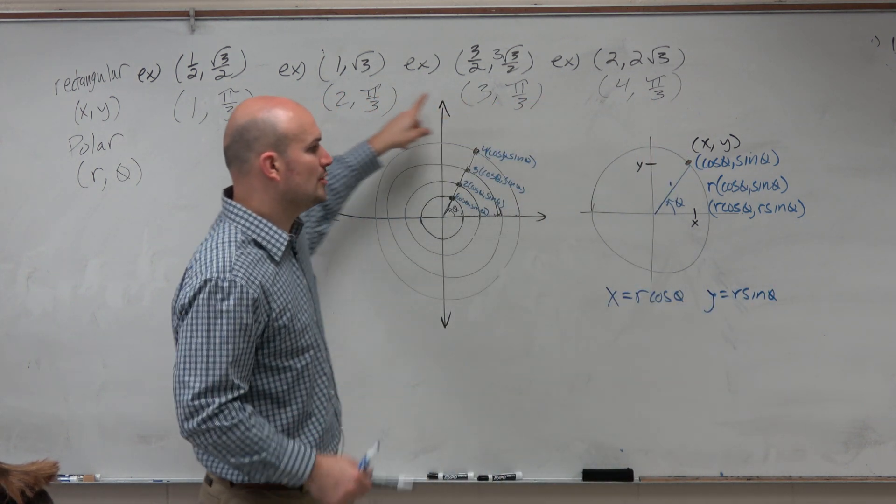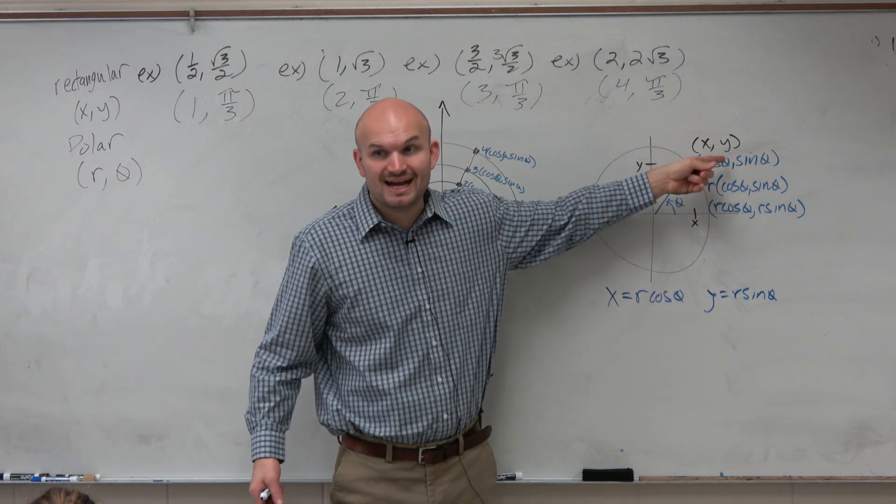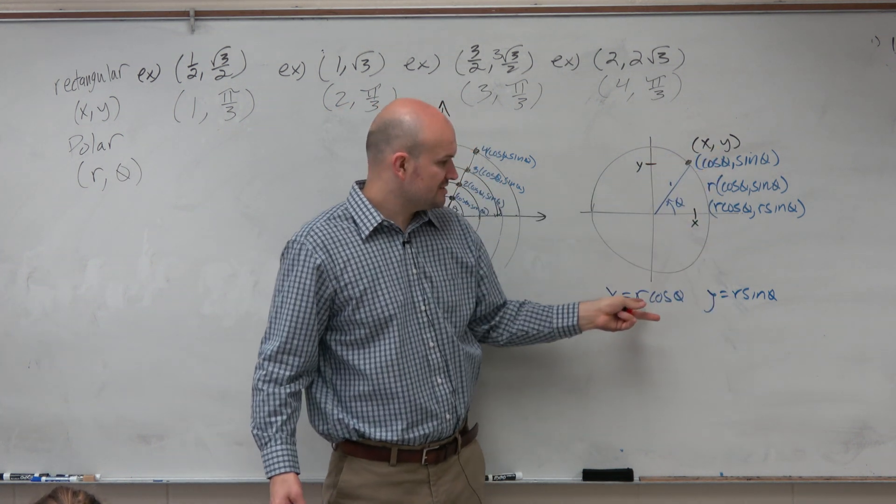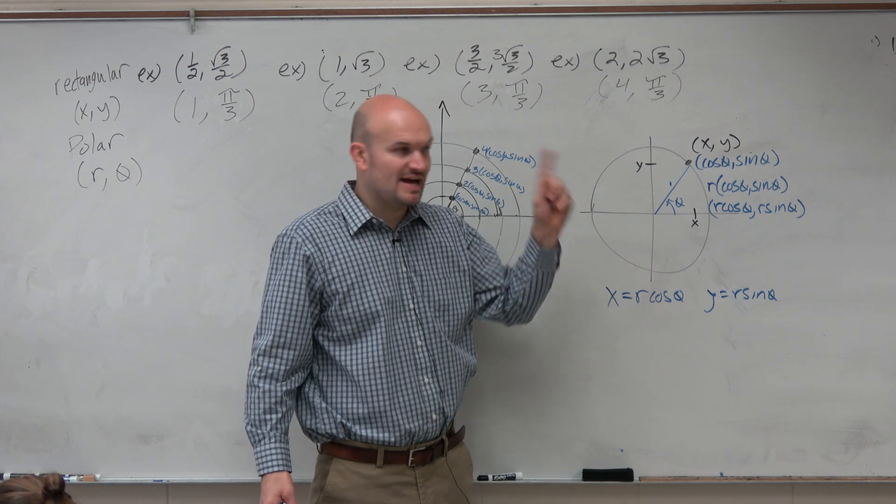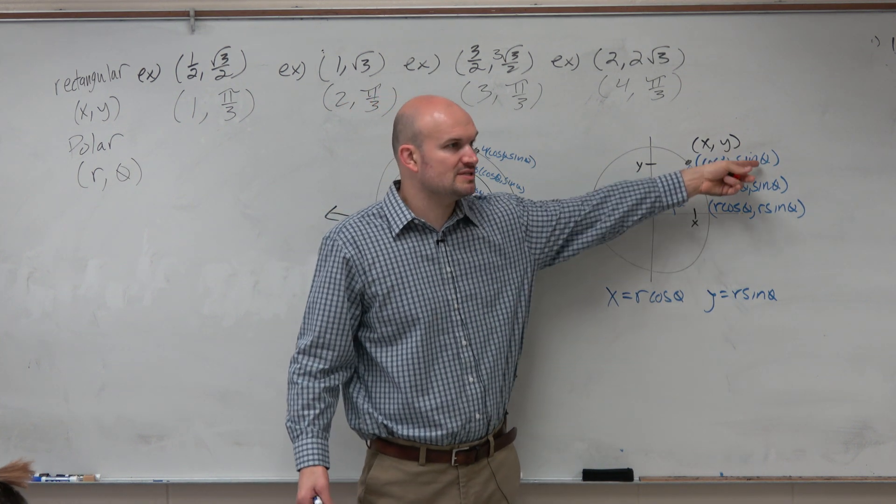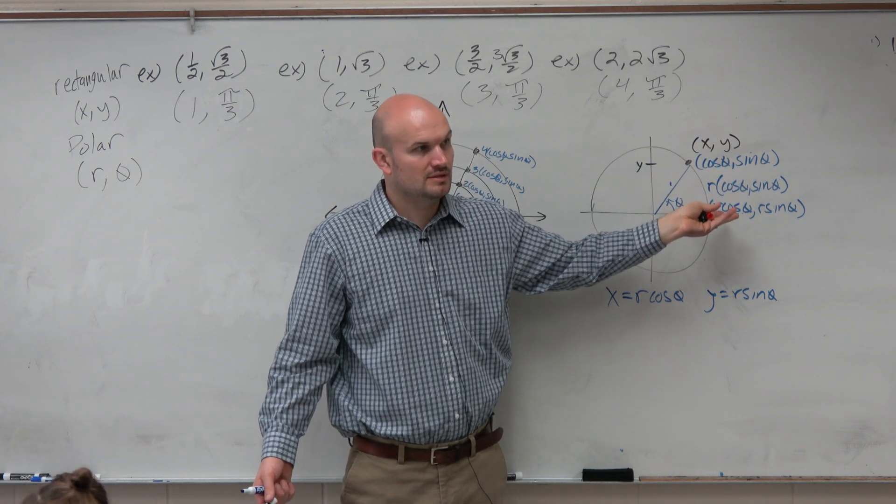If I'm given a polar point and want to know it in terms of x and y, I just take the cosine of the angle and multiply by its radius. With radius 1, it's easy - just cosine and sine of the angle. But with different radii, I multiply by that radius for each one.